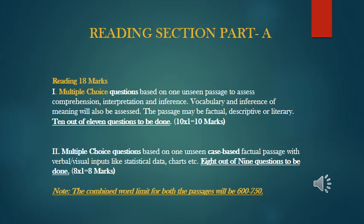The second passage will also have multiple choice questions — one unseen case-based factual passage. It may be about some case study — some family, some criminal or some political situation — with verbal or visual inputs like statistical data, charts, or some image. 8 out of 9 questions to be done. So the first passage will carry 10 marks and the second will carry 8 marks.